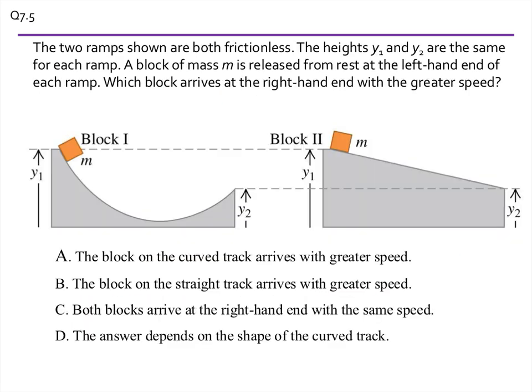Okay, here's another example. We have two very different ramps. One is sort of curved shape and goes very low and then goes up high. And the other one's just a simple incline plane. One thing that we notice is the blocks have the same initial y value and same final y value. We're told they're frictionless.